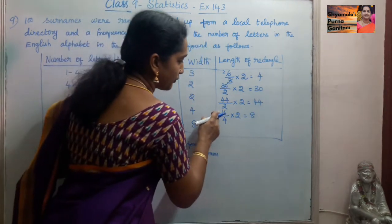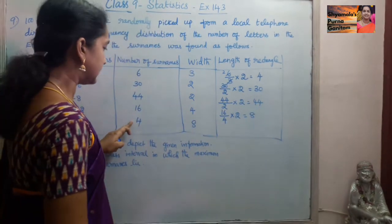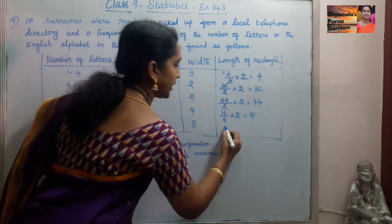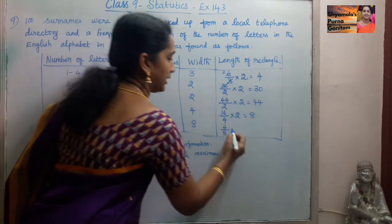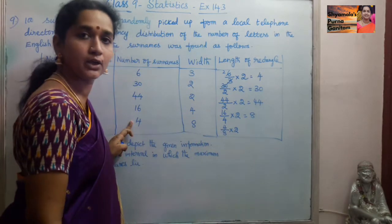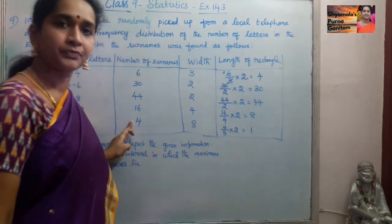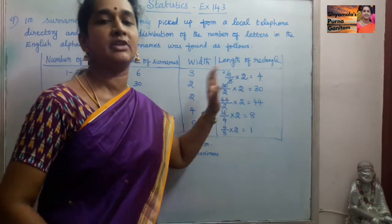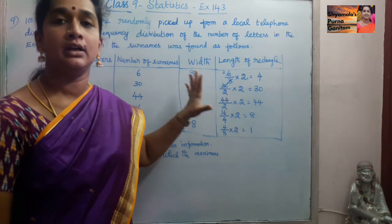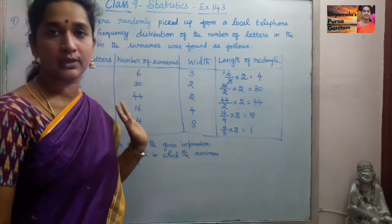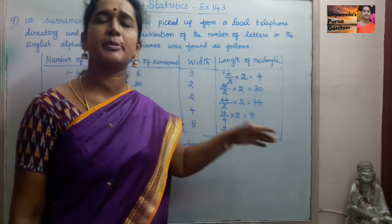For 8 to 12: simplifying gives 4 times 2 equals 8. For 12 to 20: frequency 4, width 8, times minimum width 2 — simplifying gives 8 divided by 8, which equals 1. So we have converted the lengths of the rectangles according to the given width and frequency so that they will be proportional to the frequencies.